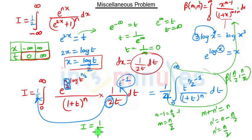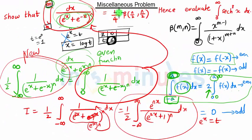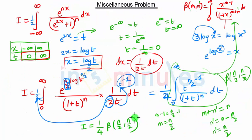Our final result is i equals 1 upon 4 times Beta of n/2 comma n/2. This matches exactly what we wanted to prove — that the integral equals 1/4 times Beta of n/2 comma n/2 — so the proof is complete.